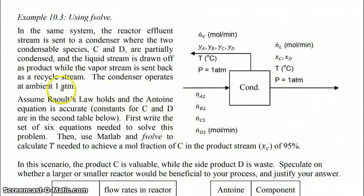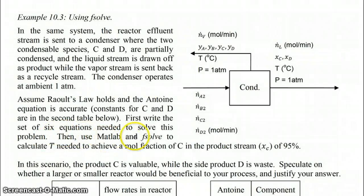The condenser is operating at ambient 1 ATM, and we're going to assume that Raoult's Law holds and the Antoine equation is accurate for the two species C and D. Our goal here is to write the six equations needed to solve this problem, and then use MATLAB and fsolve to find the temperature needed to achieve a mole fraction of C in the product stream, XC, of 95%.